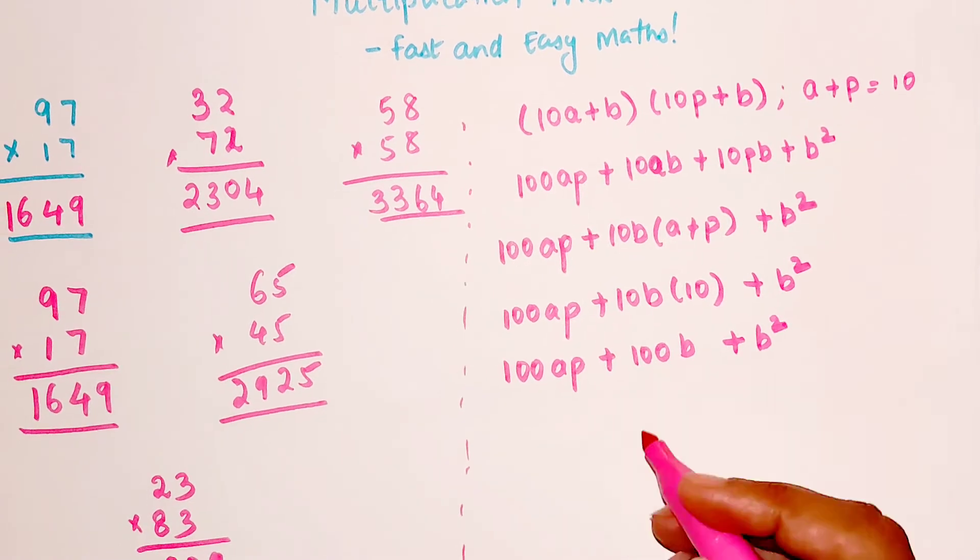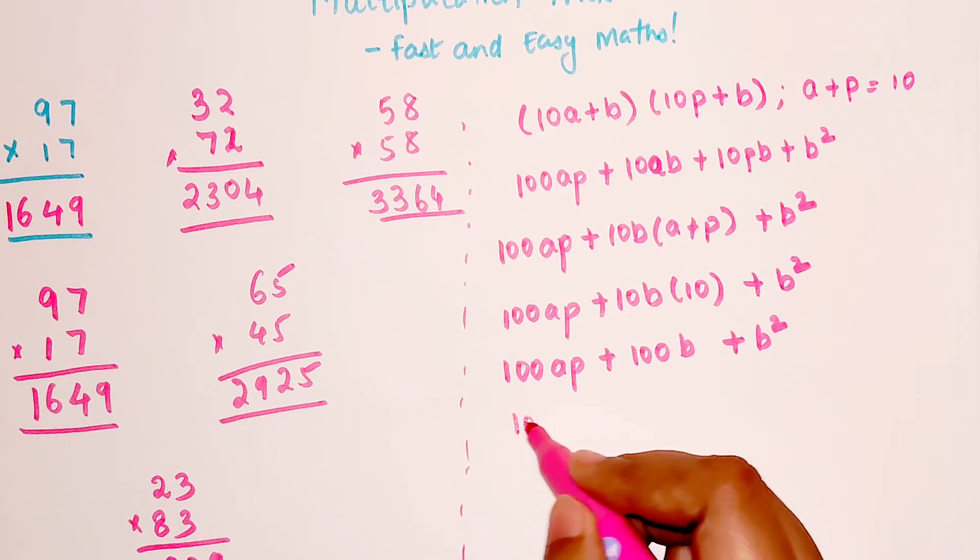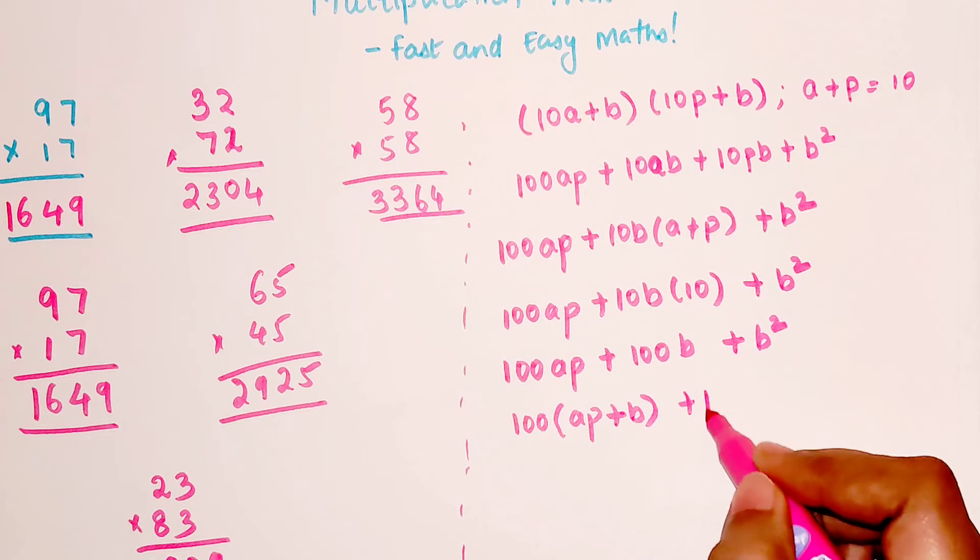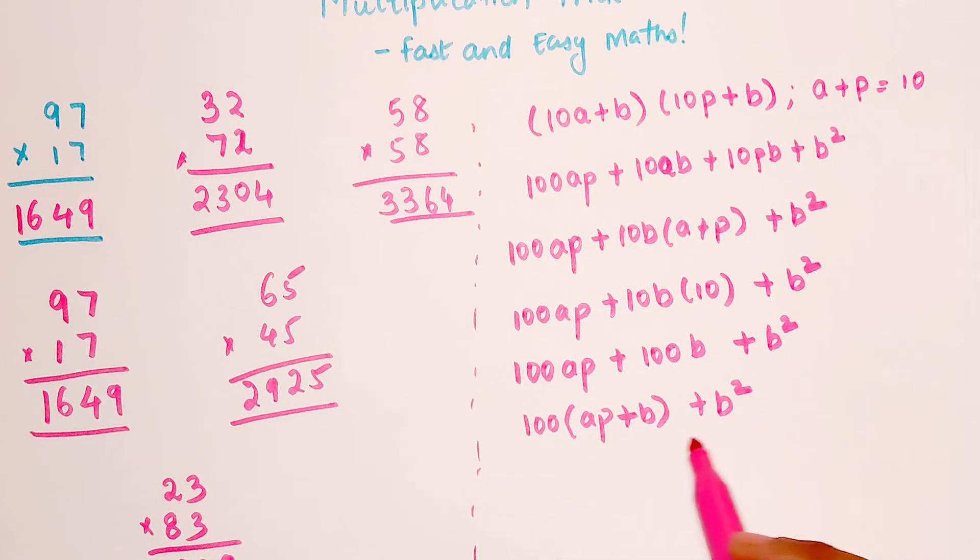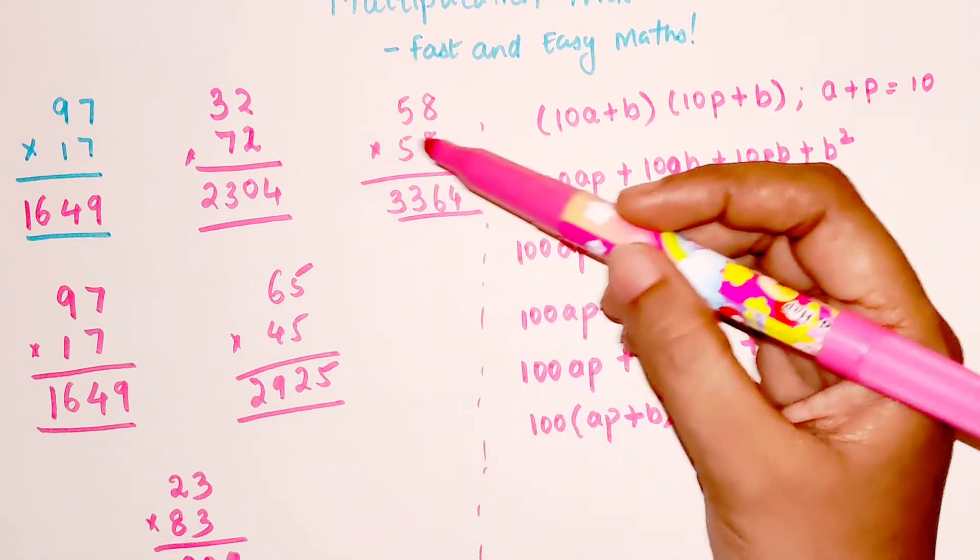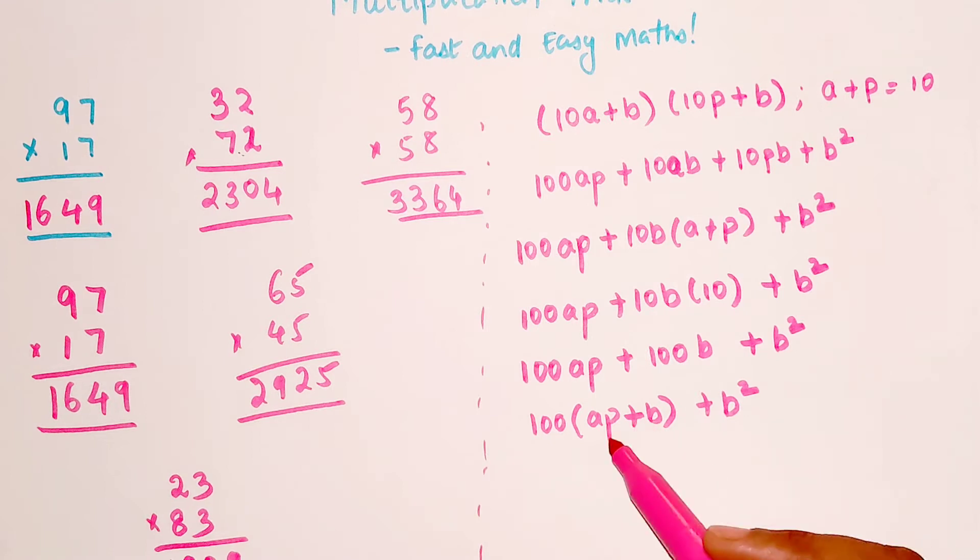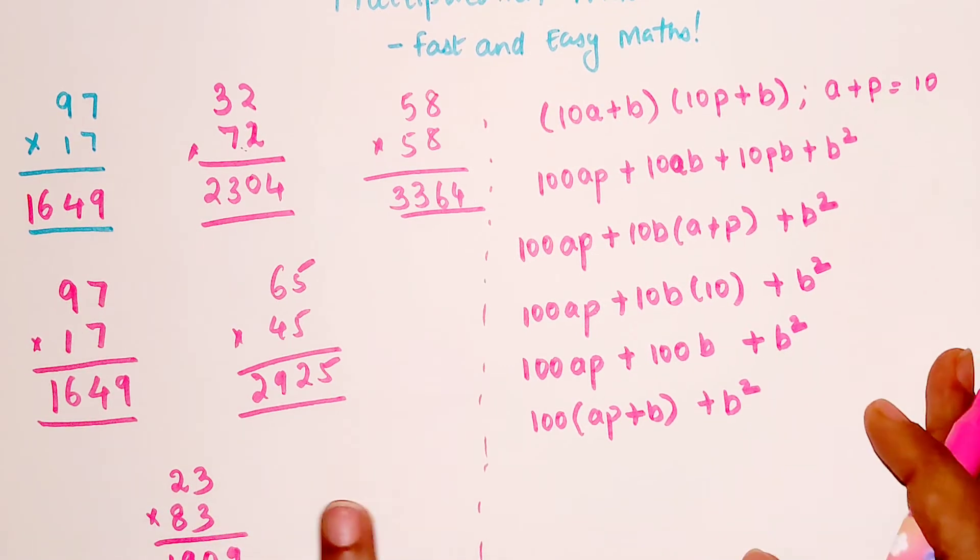So now we can say we can take 100 outside and I'm left with ap plus b plus b squared. And if you look closely, I was making you all do the same thing. I was just making you all do this multiplication first, adding the units digit, that's what happened, right? a into p plus b, and then just the b squared.